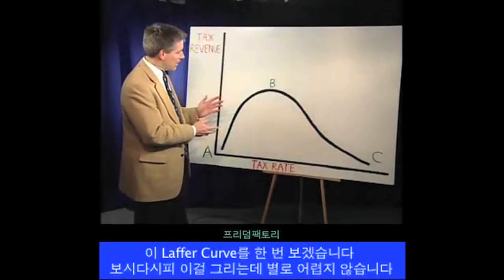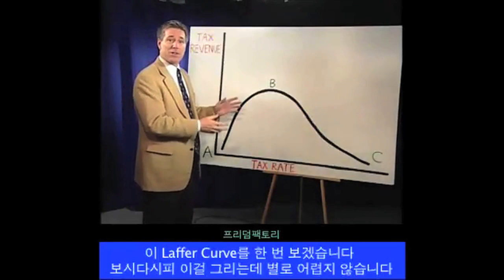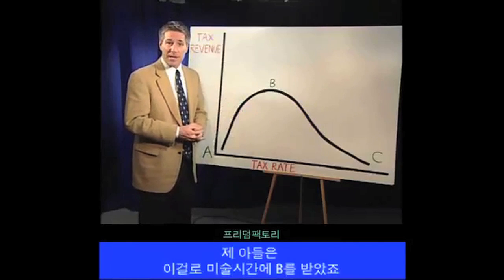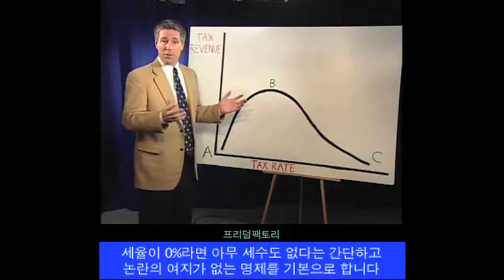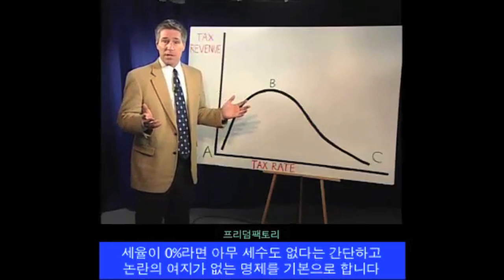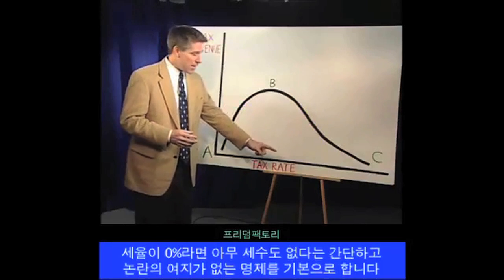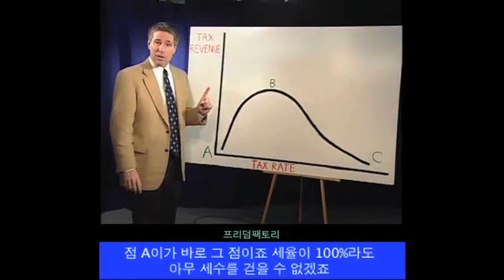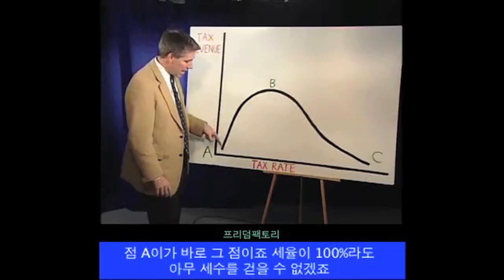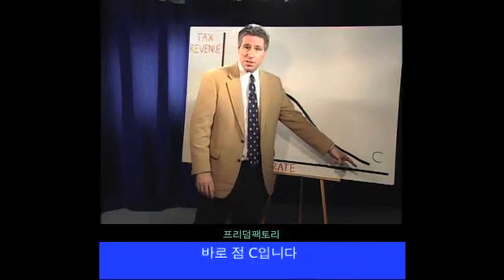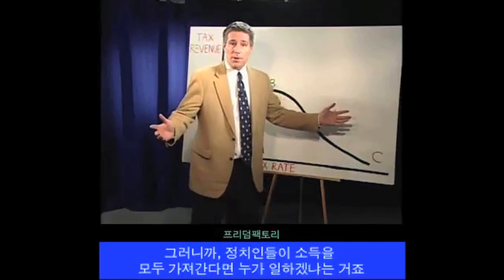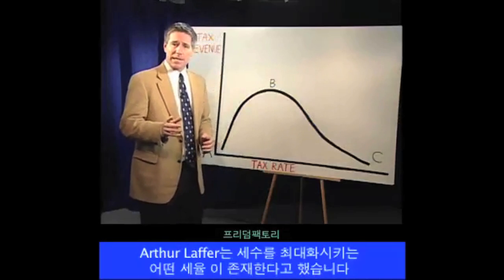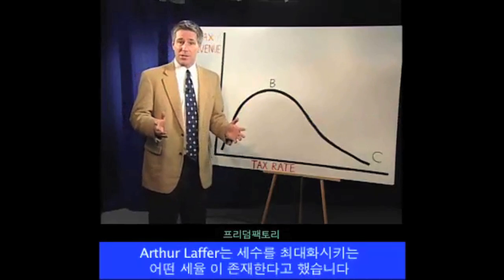Let's look at this graph of the Laffer Curve. We spared no expense to put it together — my son even got a B in his art class for this. It's based on the simple and presumably uncontroversial proposition that government won't collect any revenue if tax rates are zero. This is point A. But neither will government collect any money when tax rates are 100%, which is point C.